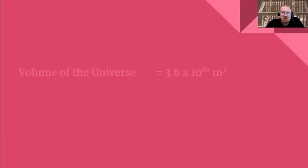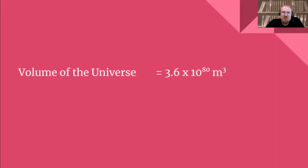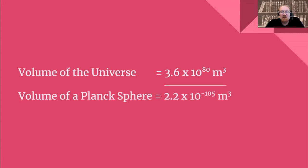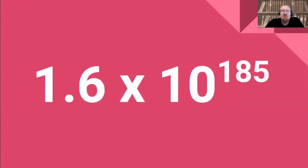Step three is simple. You take the volume of the universe, you divide it by the volume of a Planck sphere, the units cancel out and you're left with 1.6 times 10 to the power of 185 — at least if all my calculations are correct.